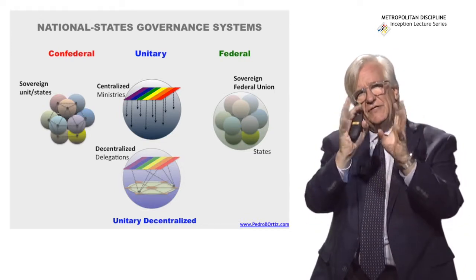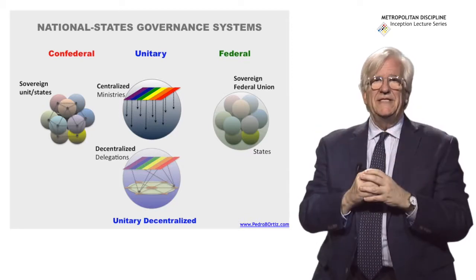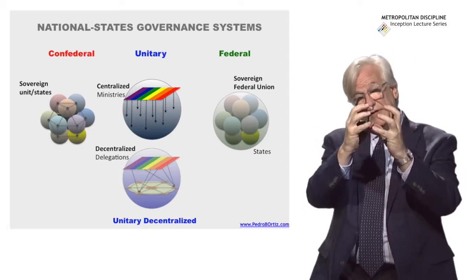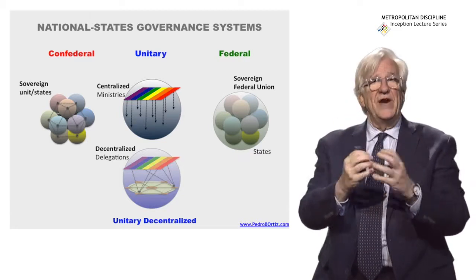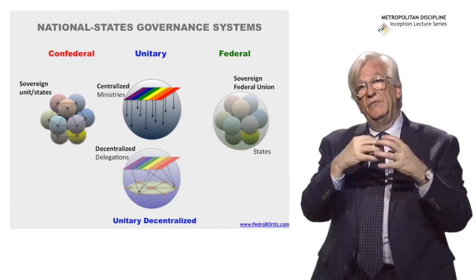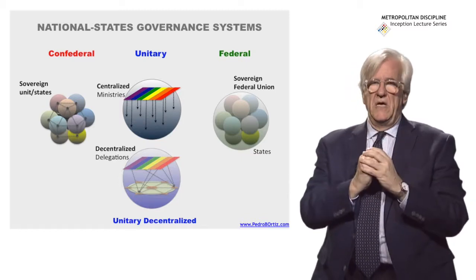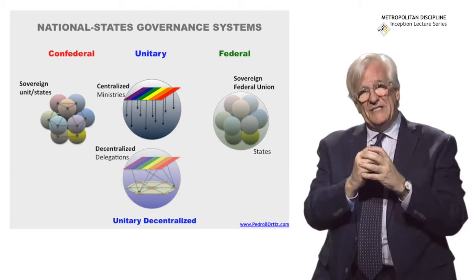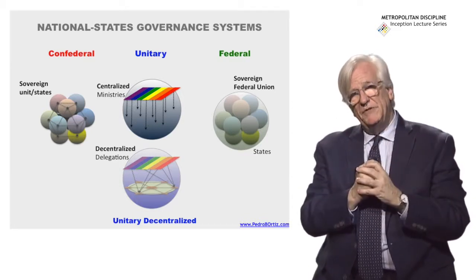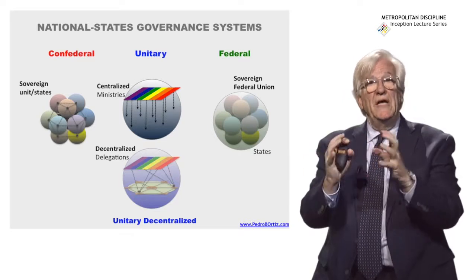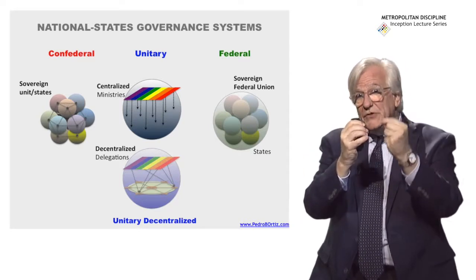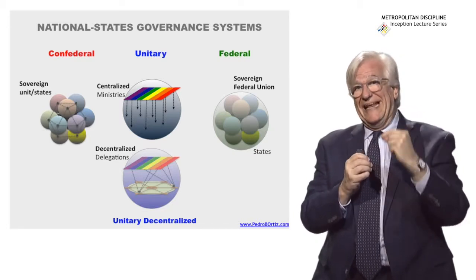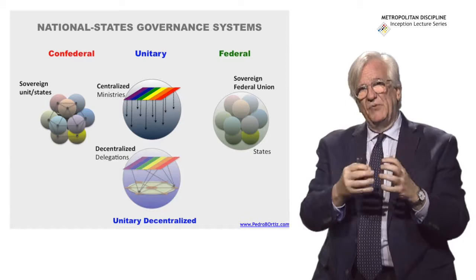In the unitary system, the ministries at the center can have a delegation — like in France with the Departement, where there is a prefect appointed by the president who coordinates the different ministries and investments in the metropolis. That can work well, as can a variation where that prefect, instead of being appointed by the president, is elected by the population and then represents the population.